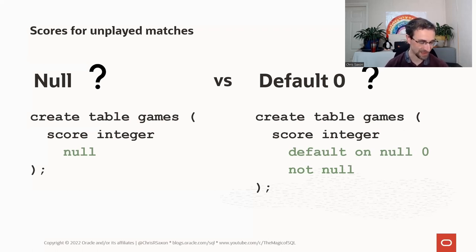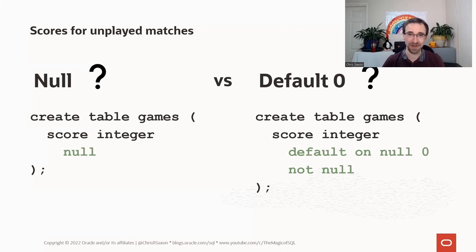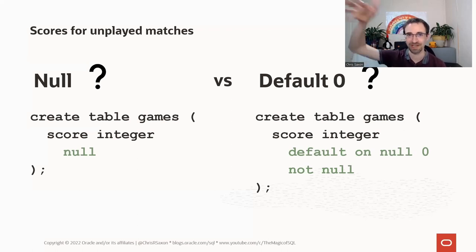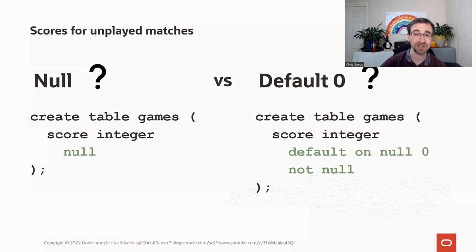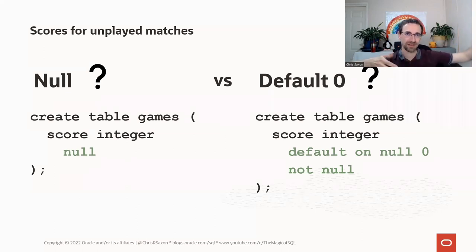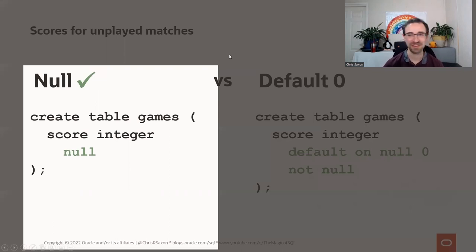How does Oracle store null versus zero? Zero is an integer with its internal representation, whereas null actually consumes no space in Oracle Database — perhaps a single byte to indicate null if there are columns after it. So we've gone for null. Final decision: team points. I'm being careful here — these are the points teams accrue in the league, not the in-game score.